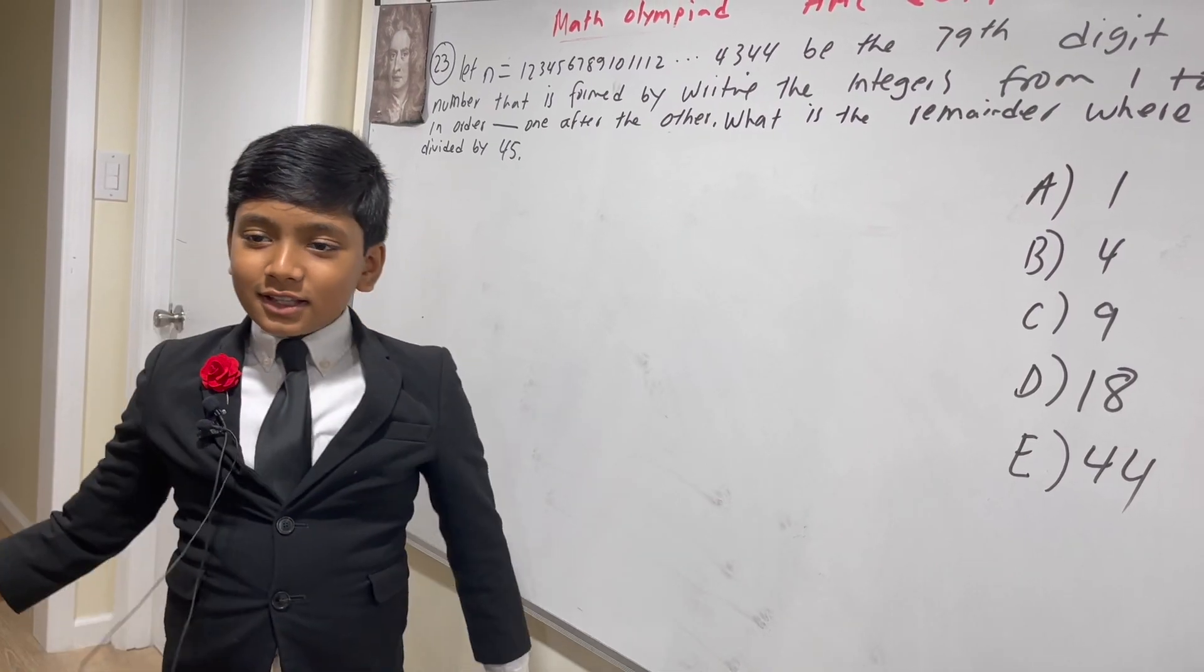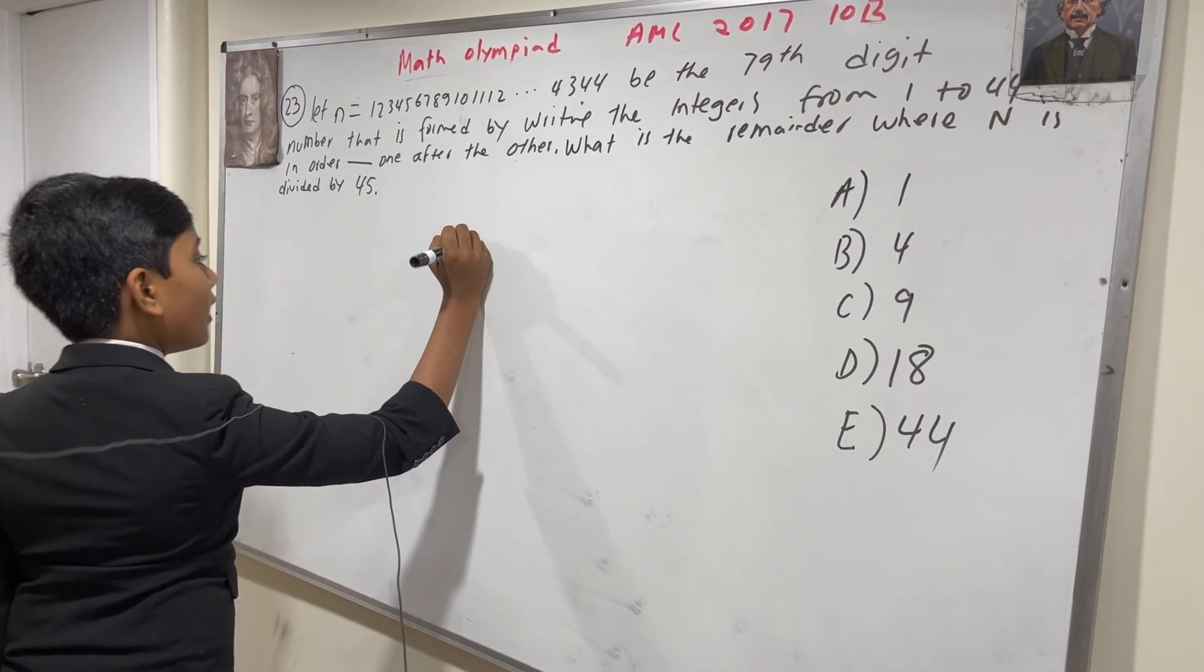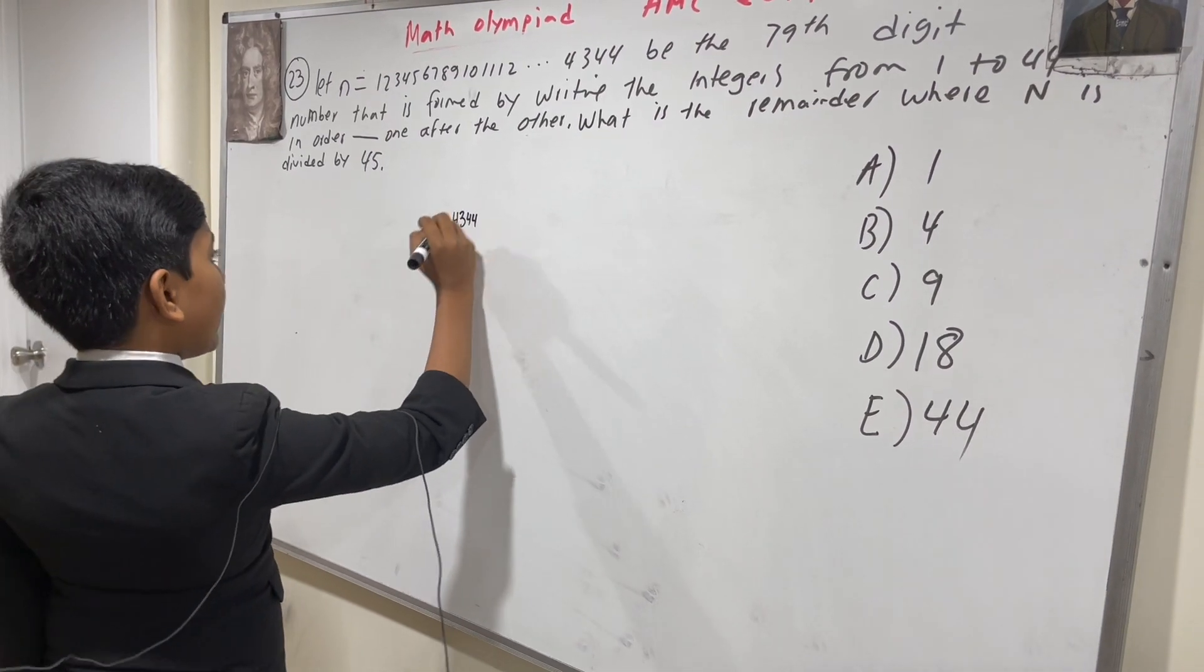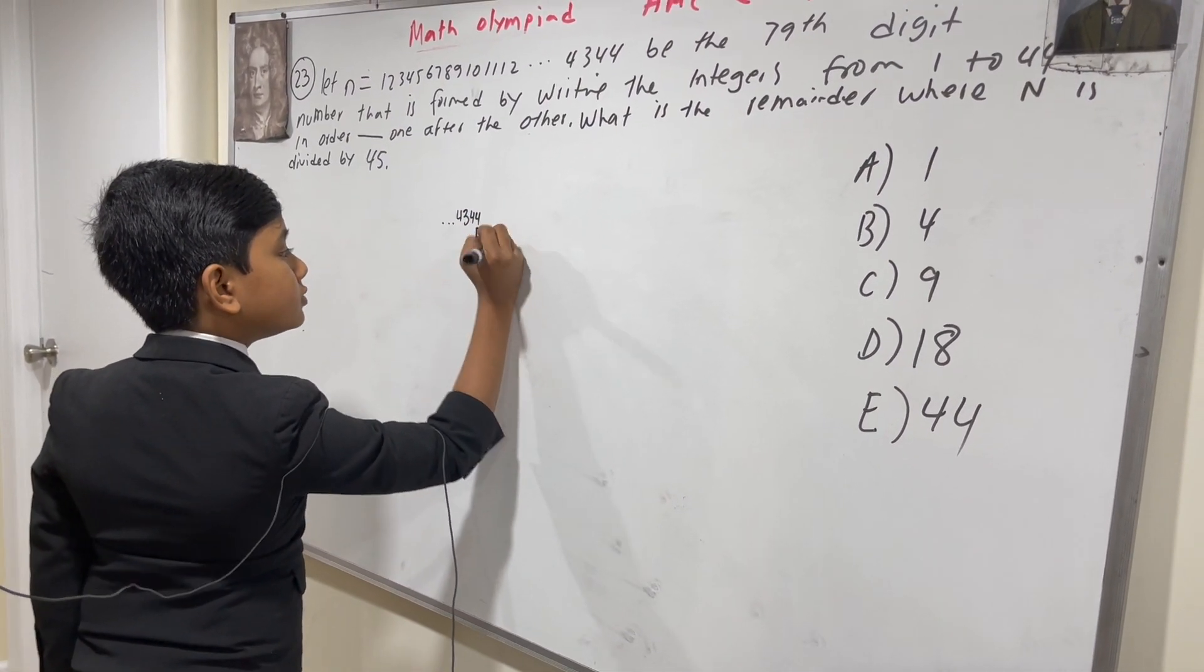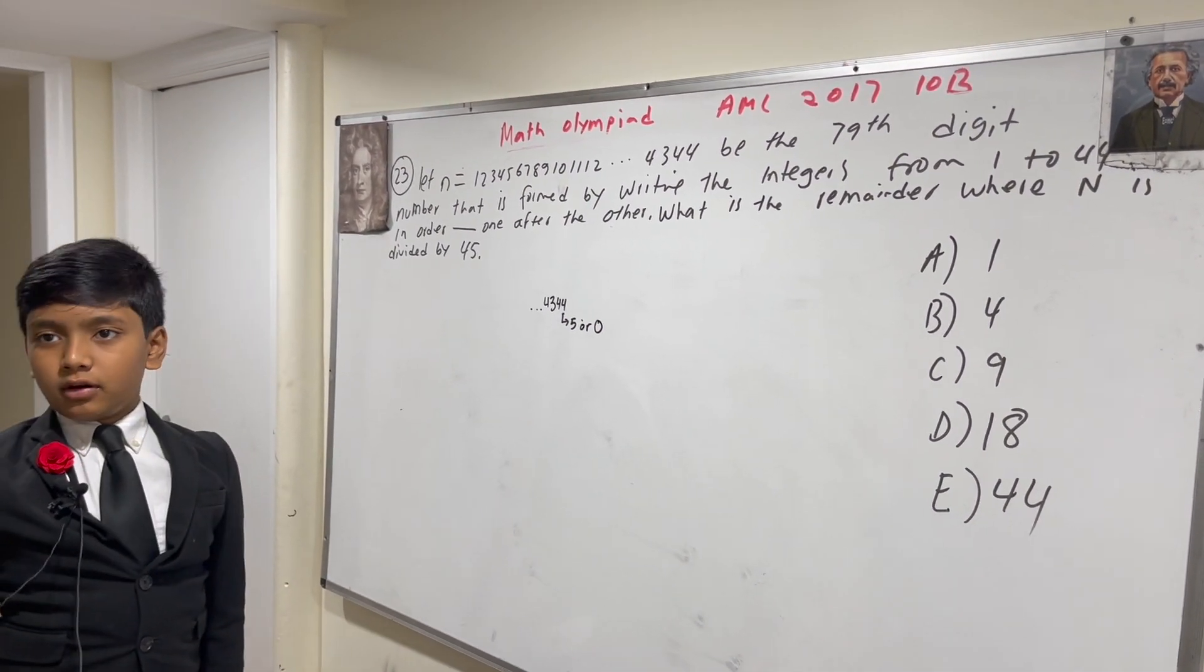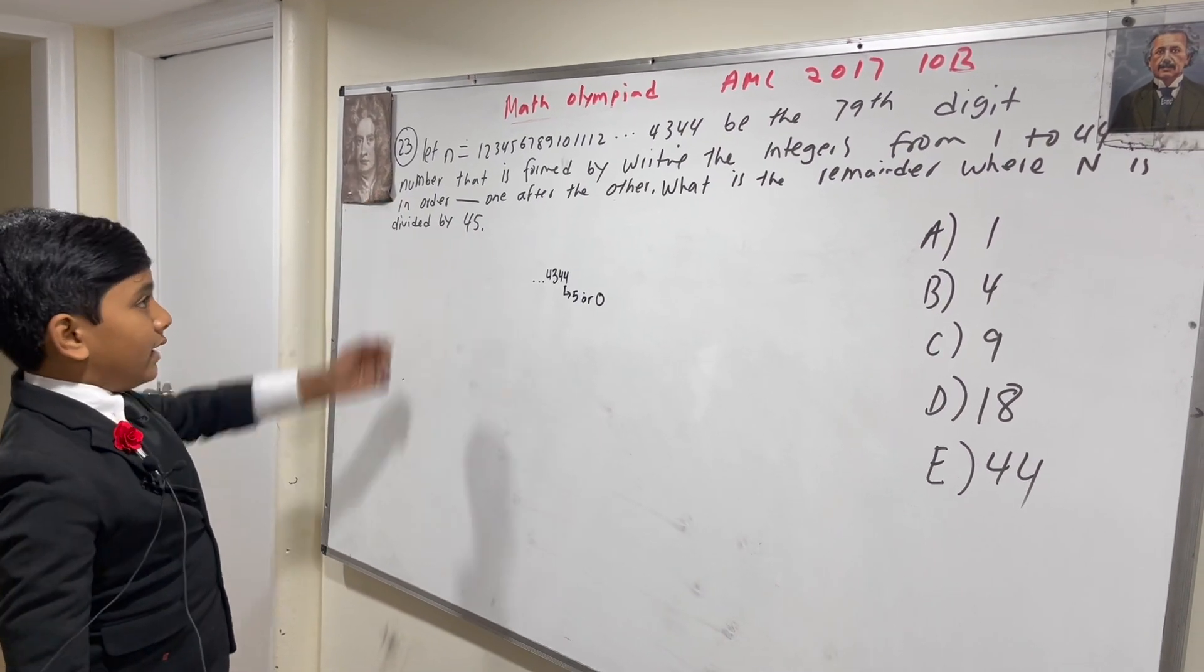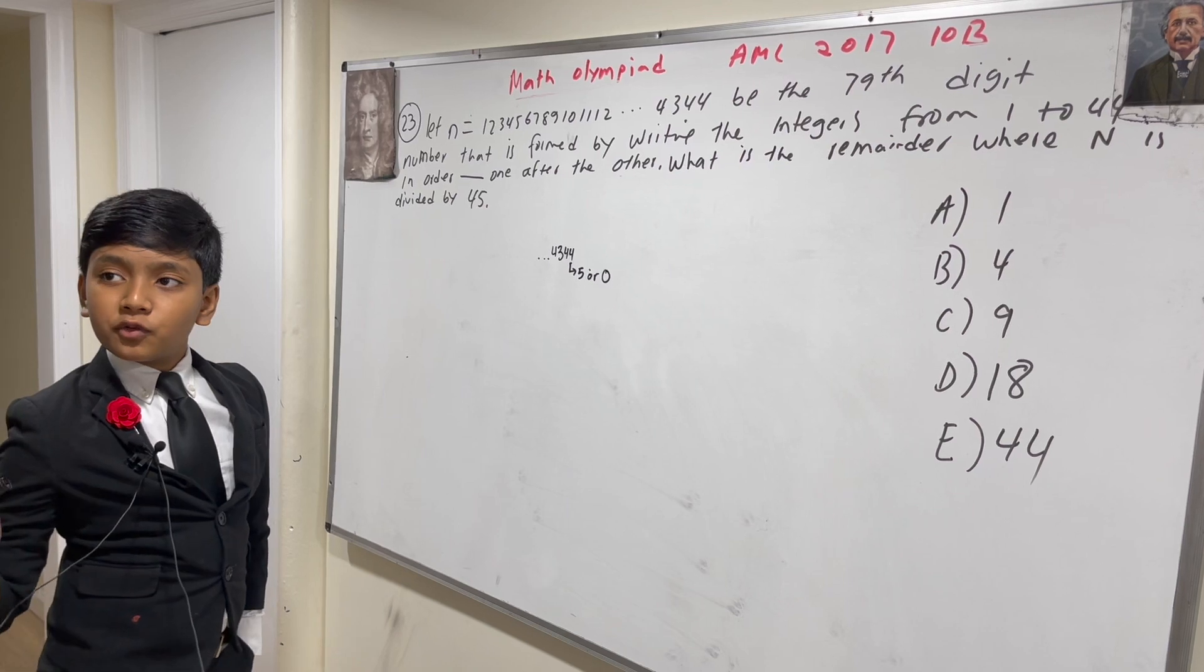First of all, let's look at this number. In order for something to be divisible by 5 with no remainder, it should end with either a 5 or a 0. However, 1, 2, 3, 4, all the way to 44, which I'll just call n from now on, does not end with a 5 or a 0. It ends with 4.